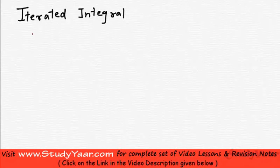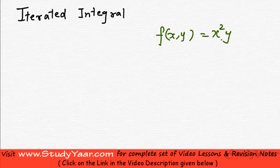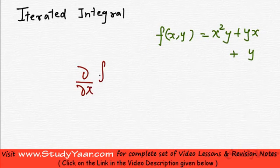Let's learn about what is an iterated integral. We know partial differentiation. If I have f of x, y equal to x squared y plus yx plus y, then the partial differentiation of this with respect to x is going to be what?